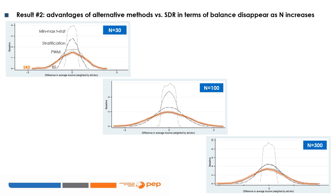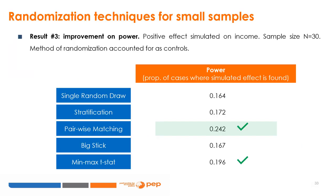This shows that alternative methods are only worth considering when working with small samples. Result number three relates to improvements in power. A positive effect on income is simulated for treated units, then 10,000 simulations are run for each method and we observe the proportion in which the existing effect is detected. The single random draw is the worst performing method with a power of only 16%, while min-max t-stat and especially pairwise matching show large improvements in power.